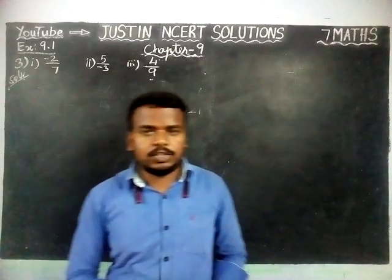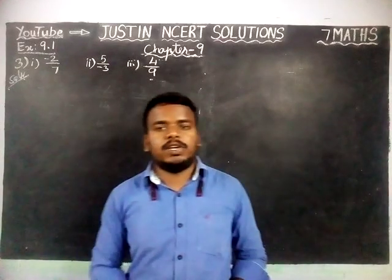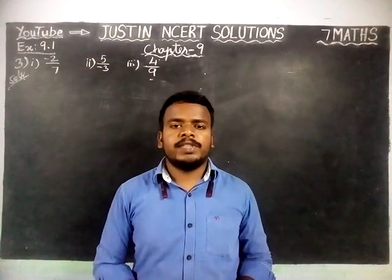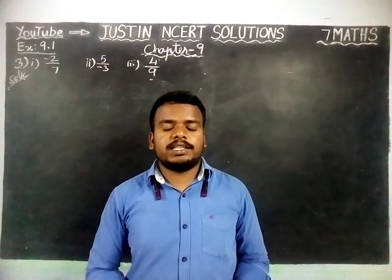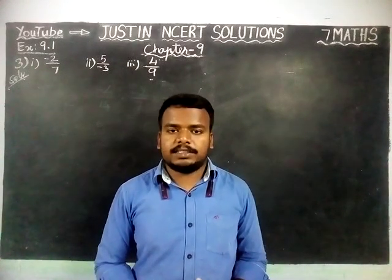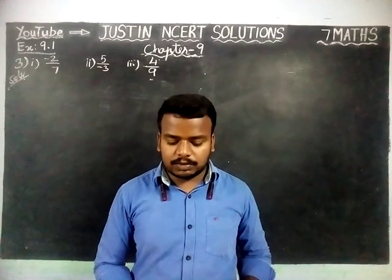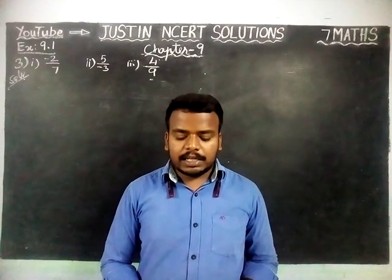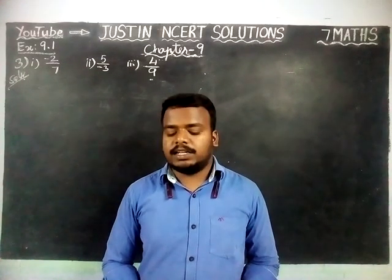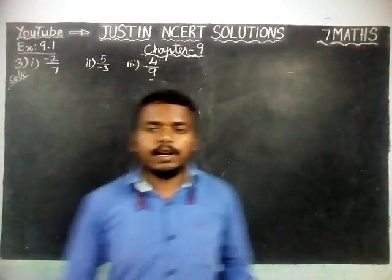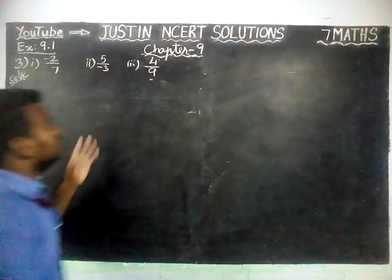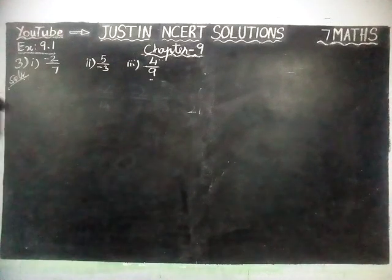Hi friends, welcome to the stream of NCIT Solutions. In this video, we are going to see Class 7 Maths, Chapter 9, Exercise 9.1, 3rd Posting: Give 4 rational numbers equivalent to the given rational numbers.